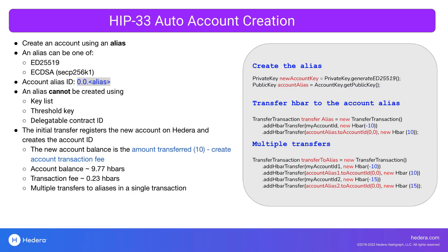The alias, when you create one, can't be a key list, a threshold key, or a delegatable contract ID. When you create this alias, it's just a simple public key that you can generate from any of the SDKs. The way that you create an account from this alias is through a transfer transaction. Here on the right, you can see we created an ed25519 key as the account alias, and then next we do this transfer. At the bottom line, you can see the transfer to the account alias, converting it to an account ID of 10 hbar.